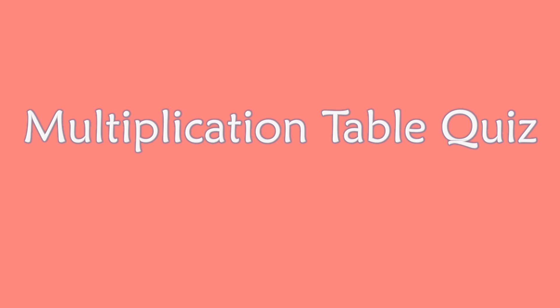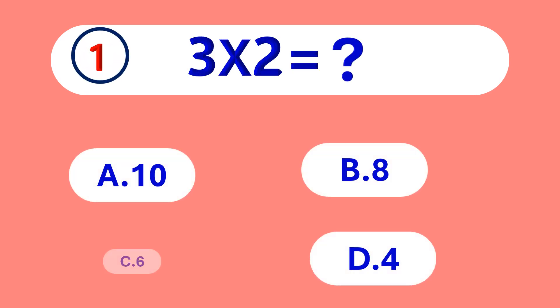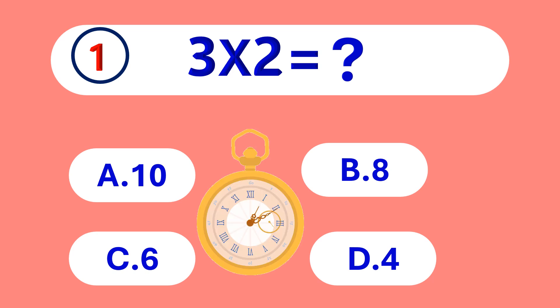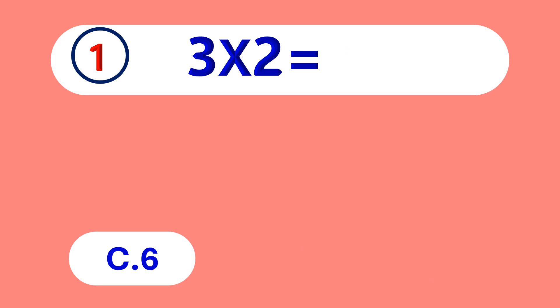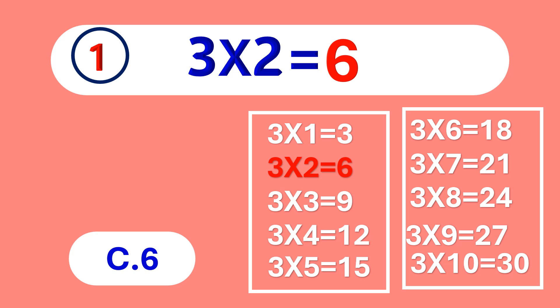Multiplication table quiz for kids. 3 times 2 is equal to... 6. 3 times 2 is 6.